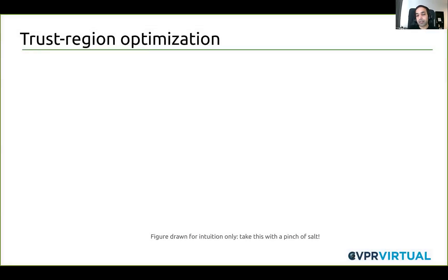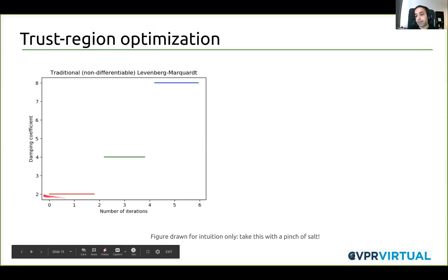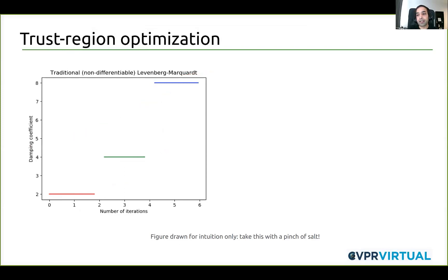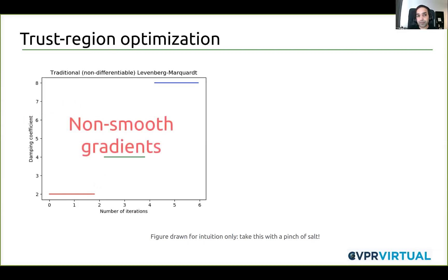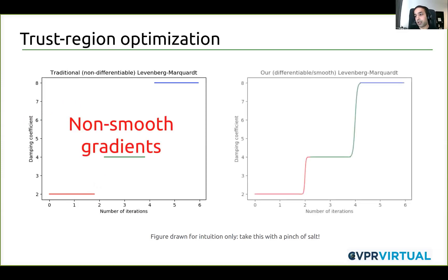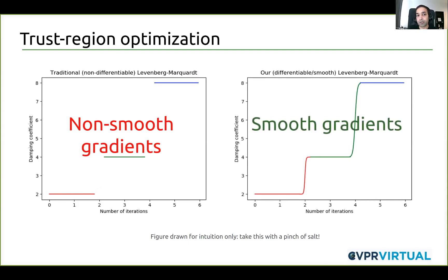We also re-parameterize the state or parameter update using a similar logistic function. Intuitively, in standard LM the step sizes lambda form a discrete increasing sequence, resulting in gradients being zero almost everywhere over the constant parts, and undefined at the points of inflection. In our case, we use smoother variants, so we get smoother gradients throughout.